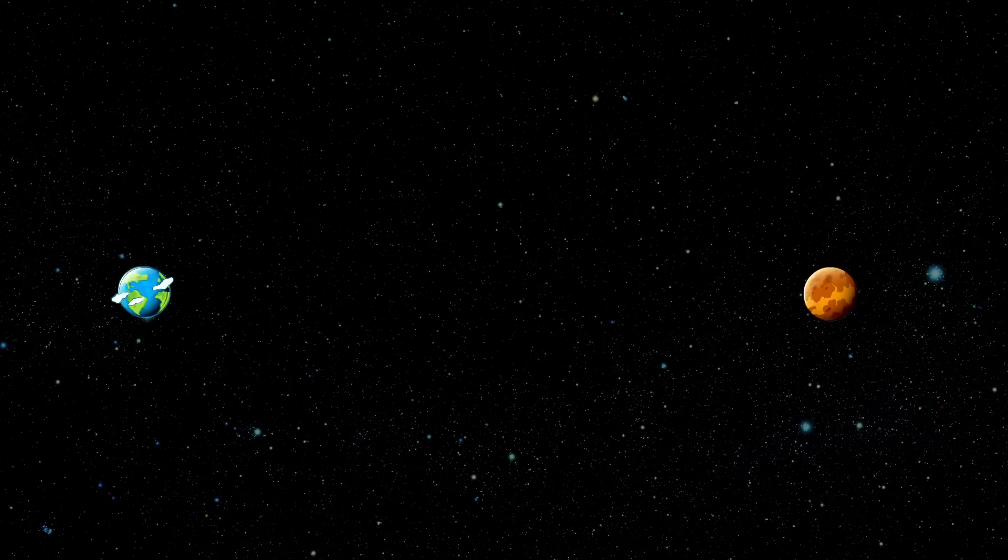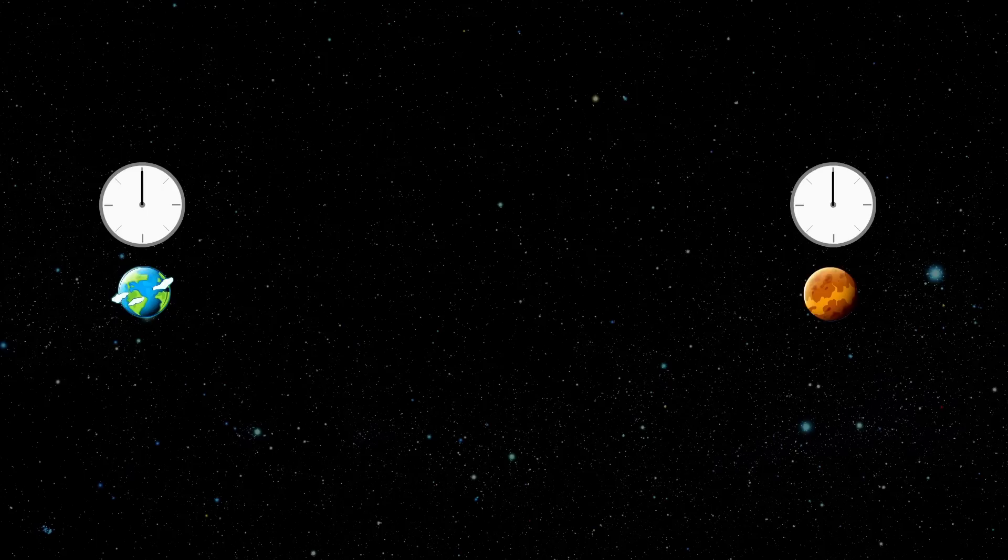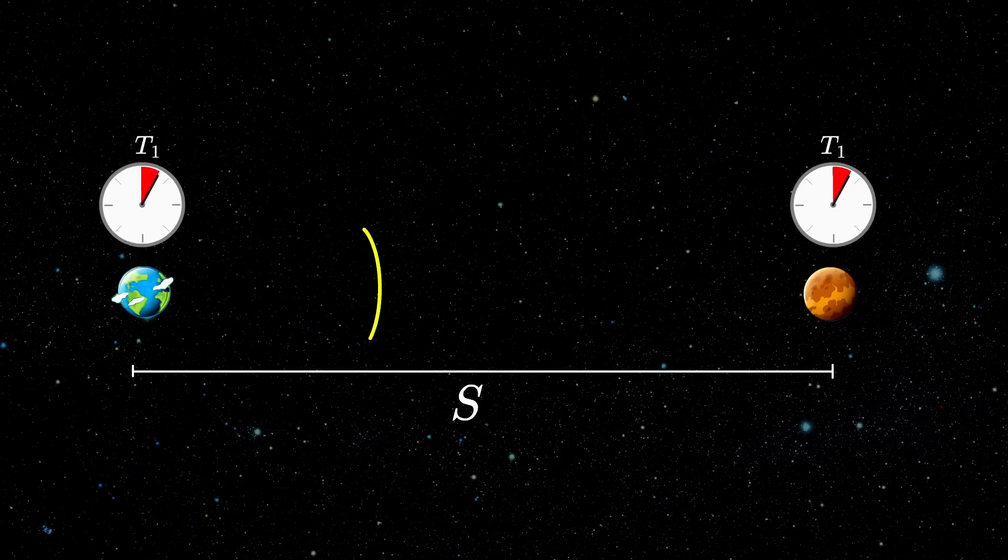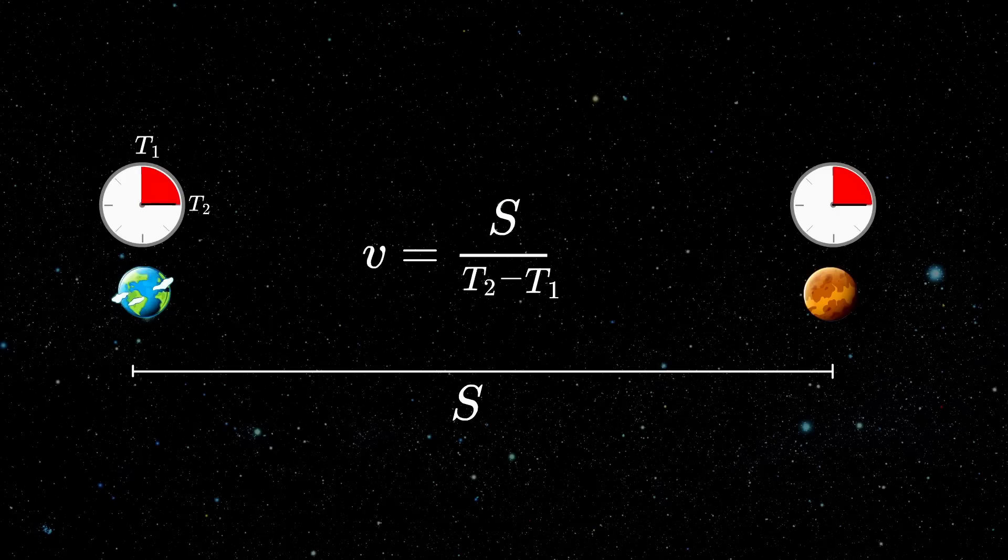To measure a one-way speed of light, we need two spatially separated clocks that are in sync with each other. Knowing the distance, we can now send a light pulse and observe how long it takes to reach the second clock. And by simple formula, calculate the velocity of that pulse. That would be all nice if we could have two spatially separated clocks that are in sync.